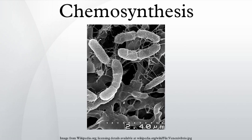Giant tube worms use bacteria in their trophosome to fix carbon dioxide and produce sugars and amino acids. Some reactions produce sulfur — hydrogen sulfide chemosynthesis: 12H2S + 6CO2 → C6H12O6 + 6H2O + 12S. Instead of releasing oxygen gas as in photosynthesis, the process produces solid globules of sulfur. In bacteria capable of chemosynthesis, such as purple sulfur bacteria, yellow globules of sulfur are present and visible in the cytoplasm.